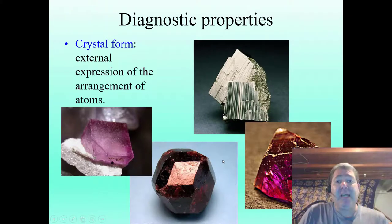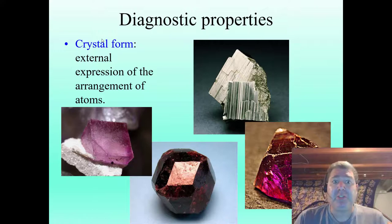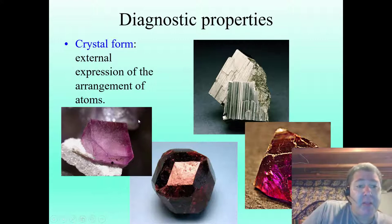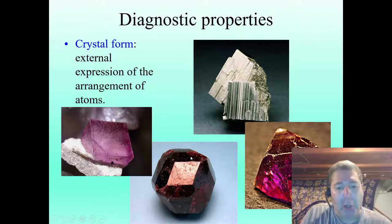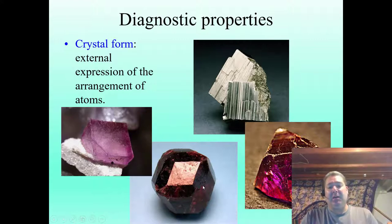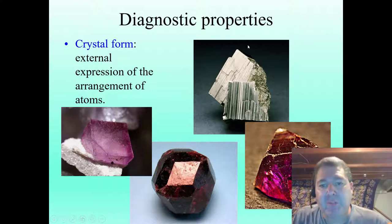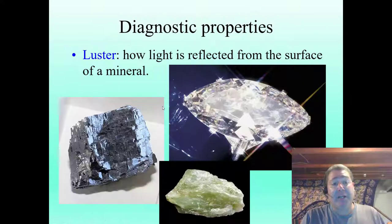Diagnostic property number one: crystal form. This is going to be the external expression of the arrangements of the atoms inside. So we see this beautiful piece of fluorite here — these are the crystal forms. This dodecahedron is very common for garnet to form in. Garnet loves to push other minerals out of the way, so often you will find these perfect little dodecahedrons. And we can see these kinds of twinnings — I believe this is marcasite up here — just beautiful expressions of the order in which those atoms are arranged inside the mineral.